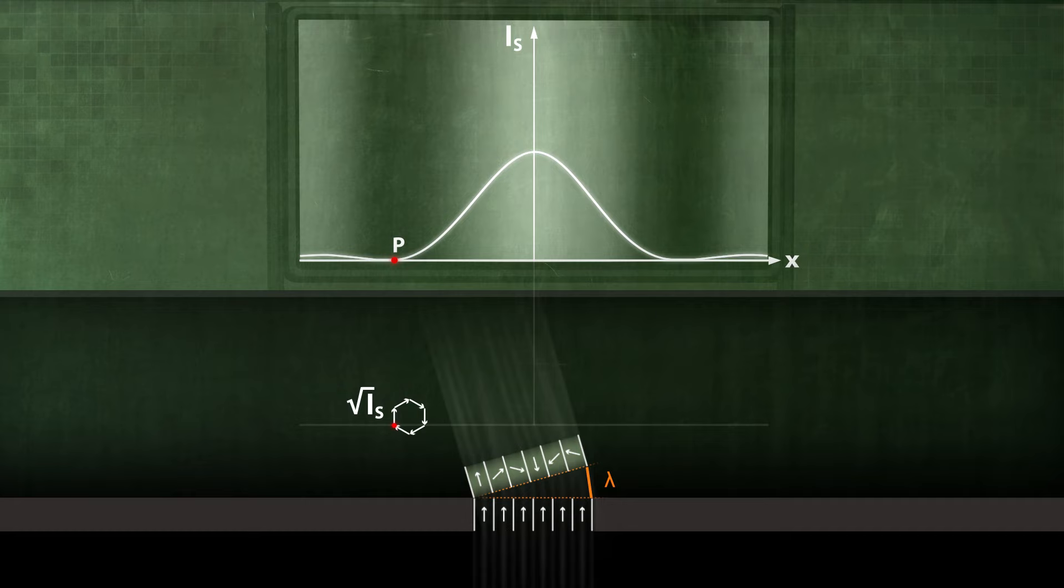Thus, the phase difference between two successive partial waves is 60 degrees. The resulting phase difference is phi equals 6 times 60 degrees equals 360 degrees or 2 pi.